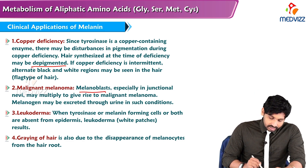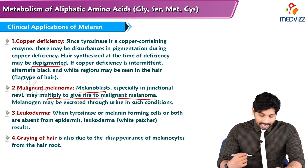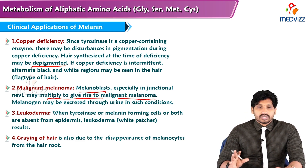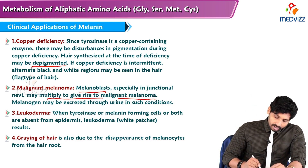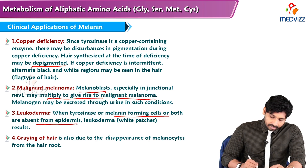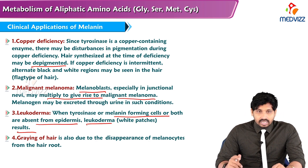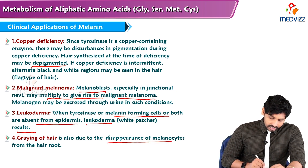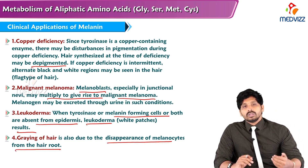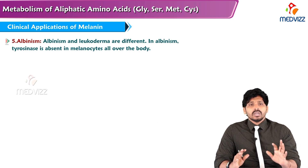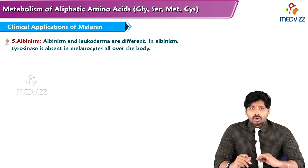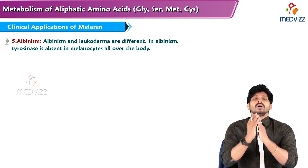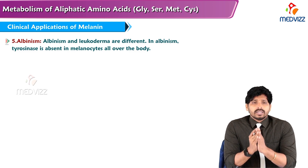In malignant melanoma, melanoblasts — especially in junctional nevi — may multiply to give rise to malignant melanoma. Melanogen may be excreted through urine in such conditions. In leukoderma, when tyrosinase or melanin-forming cells are absent from the epidermis, white patches result. Graying of hair is also due to disappearance of melanocytes from the hair root. In albinism, tyrosinase is absent in melanocytes all over the body.